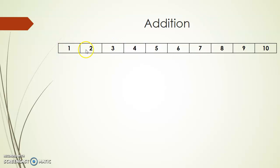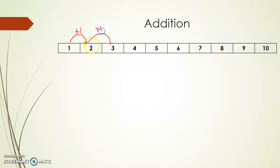So now here we have written numbers from 1 to 10. I hope you might remember the 1 to 100 number chart that we have used earlier in our sessions. So here you can see, if I start from 1, the next number is obtained by adding 1 to this number — that is 1 plus 1, we get 2.